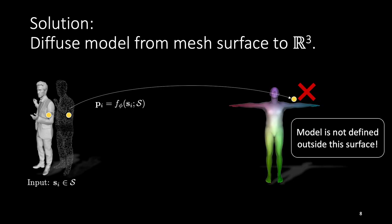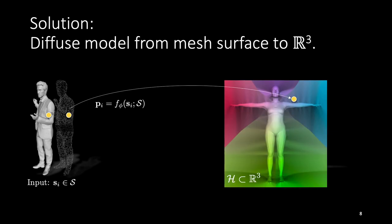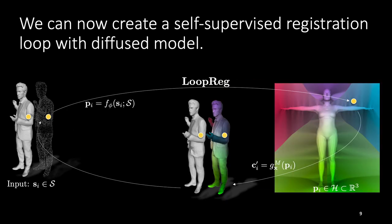We present an alternative to the problematic UV parameterization. We use the distance transform of the model surface to diffuse the model function from the surface to R³. We can now create a self-supervised registration loop with the diffused model as the network predictions that offshoot the model surface are also valid.